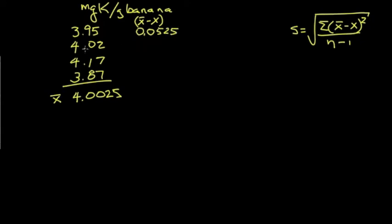The difference between 4.0 and 4.02, that's a negative number. Here we're 0.175. The next is minus 0.1675, and then finally this last is 0.1325.